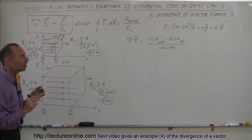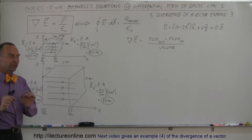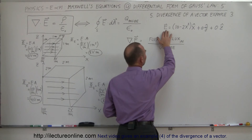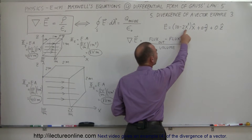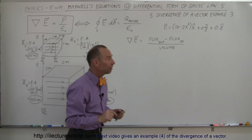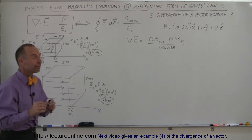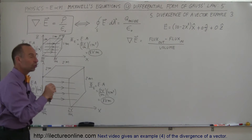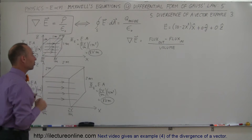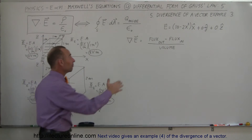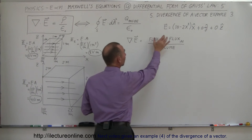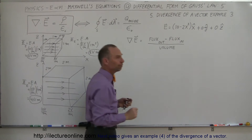But now we're going to see something a little bit different. Here we have an equation that represents the electric field as a function of position, but it's no longer a linear equation — it's a quadratic equation. It depends on the position squared. So what does that do to our assumption that the divergence of the electric field equals flux out minus flux in, divided by the volume?